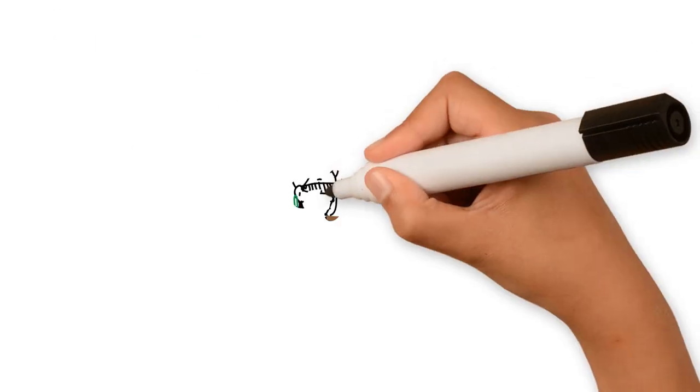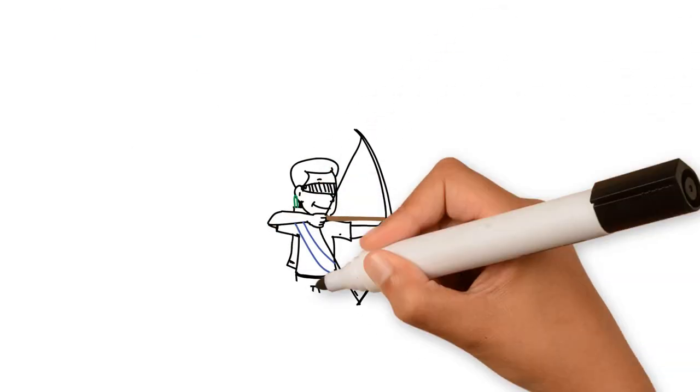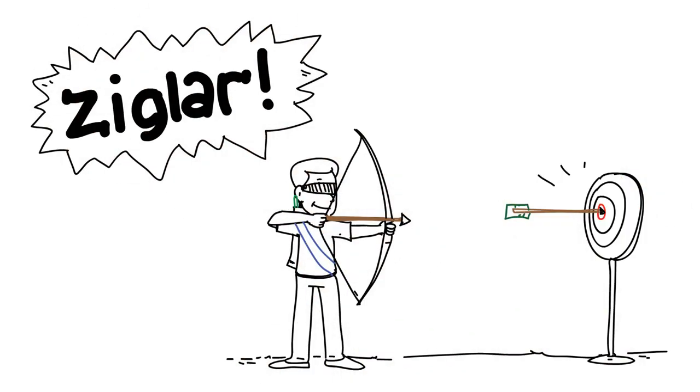And you might say, well, now, Ziegler, my goodness, of course you could. That's ridiculous. How on earth could a person possibly hit a target he couldn't even see?